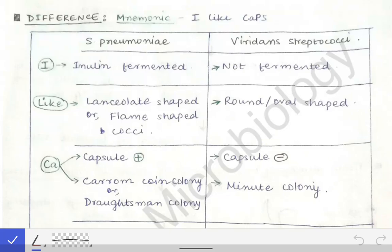Here we come to a very important difference which is commonly asked in university exams and viva. When the examiner asks you about streptococcus, they are very likely to ask you the difference between Streptococcus pneumoniae and Viridans streptococci. This is because both of these belong to the same group — alpha-hemolytic streptococci — which is why examiners use this to confuse you.